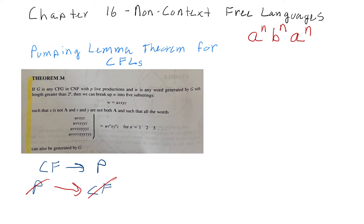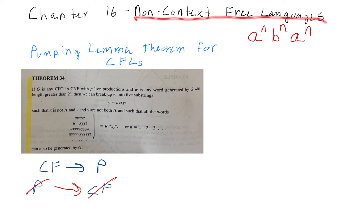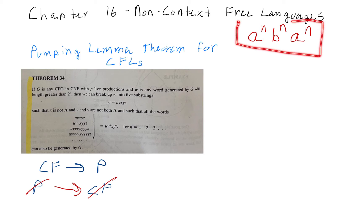Welcome to CS320, Chapter 16. In this chapter, we're going to talk about non-context-free languages. Our first non-context-free language we're going to look at is A to the N, B to the N, A to the N. How do we know this is not context-free?